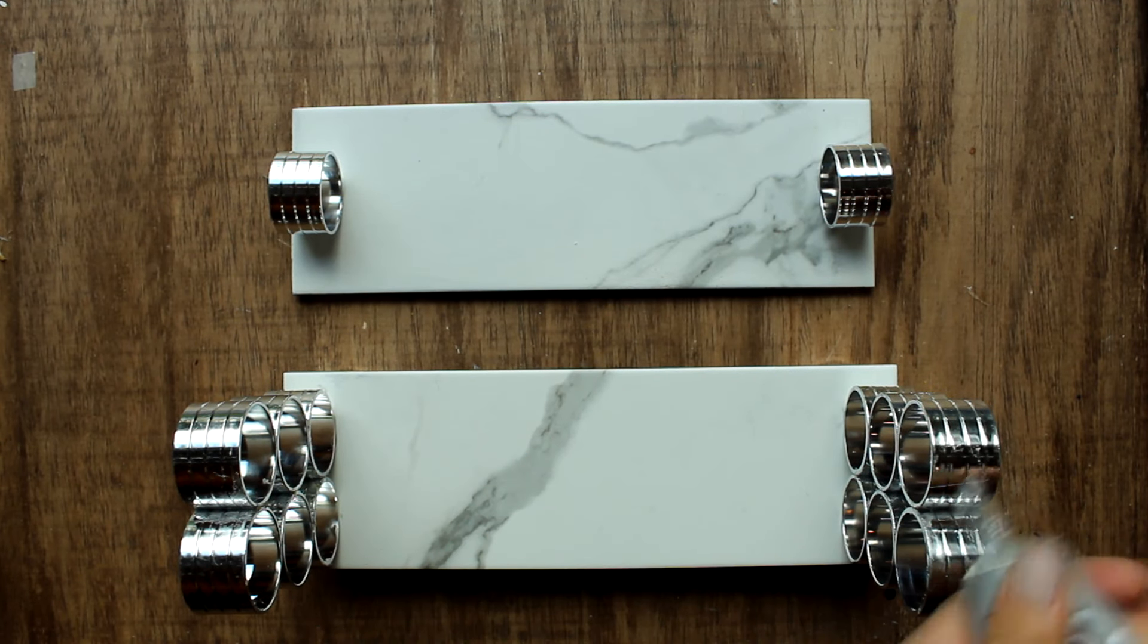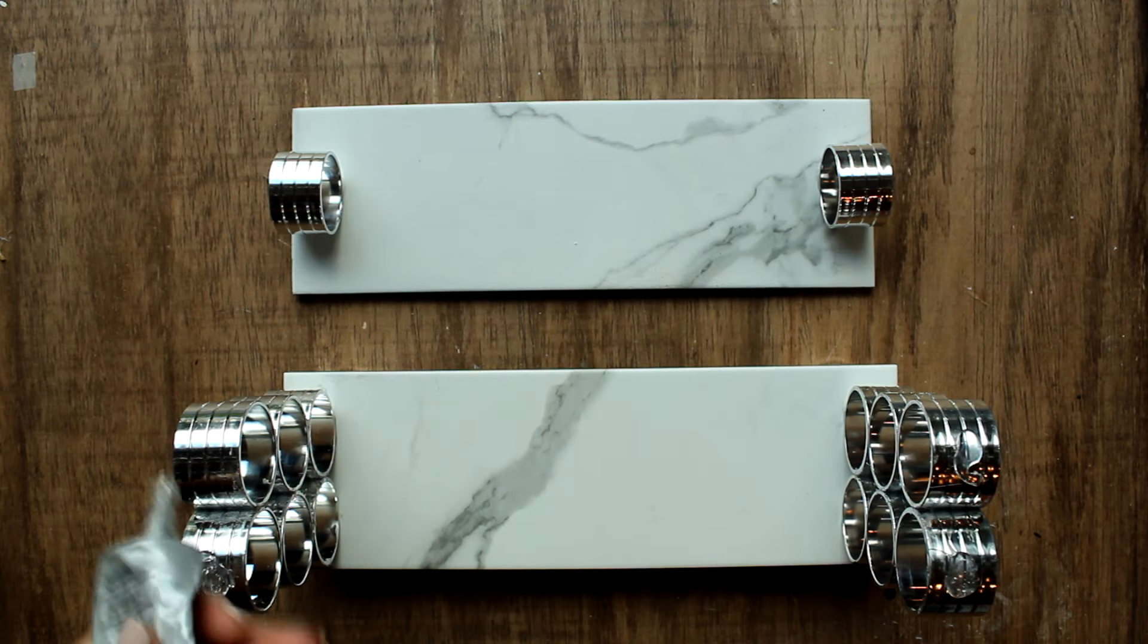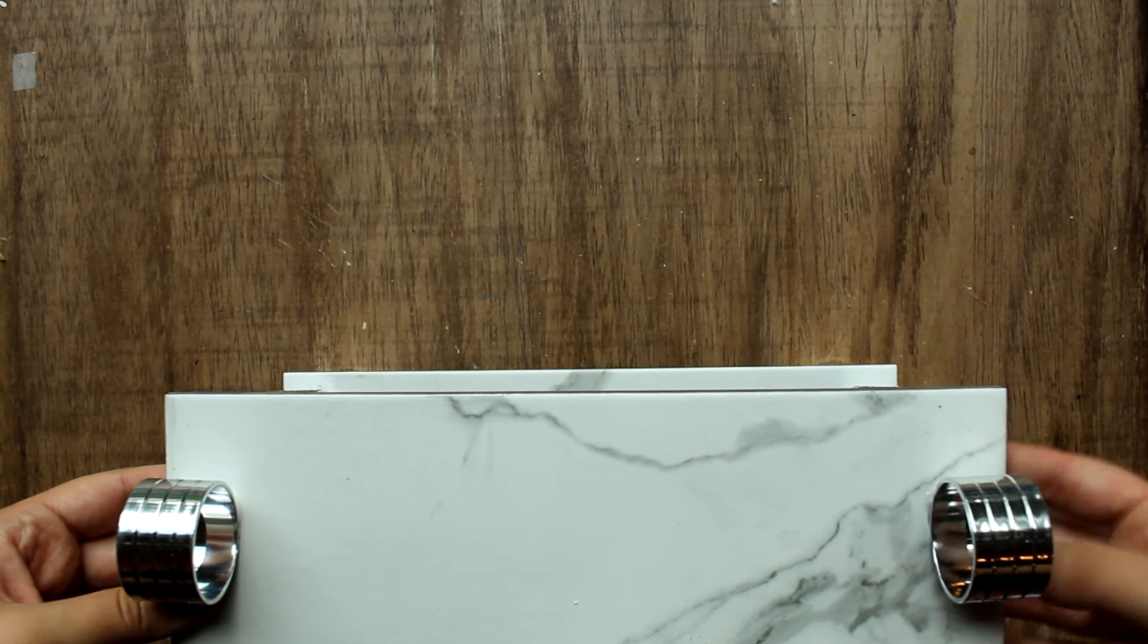With the risers nice and dry, I went ahead and put E6000 glue on top of each of the four little napkin rings on top. And then carefully placed the top shelf on top of that, making sure it was all aligned with the bottom.